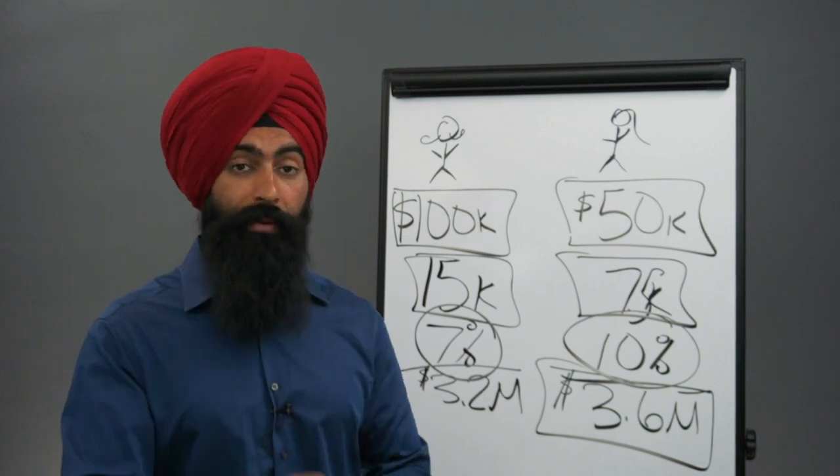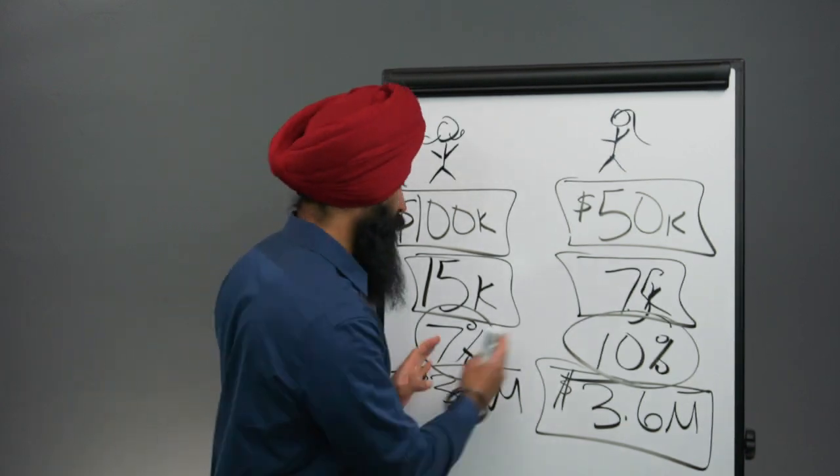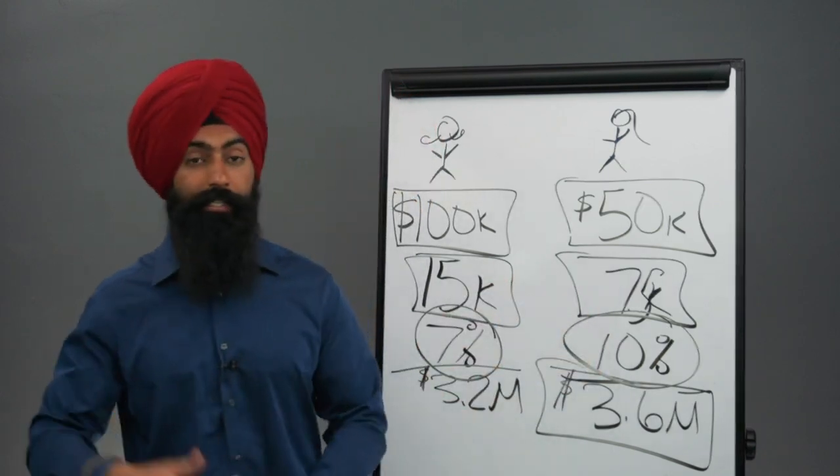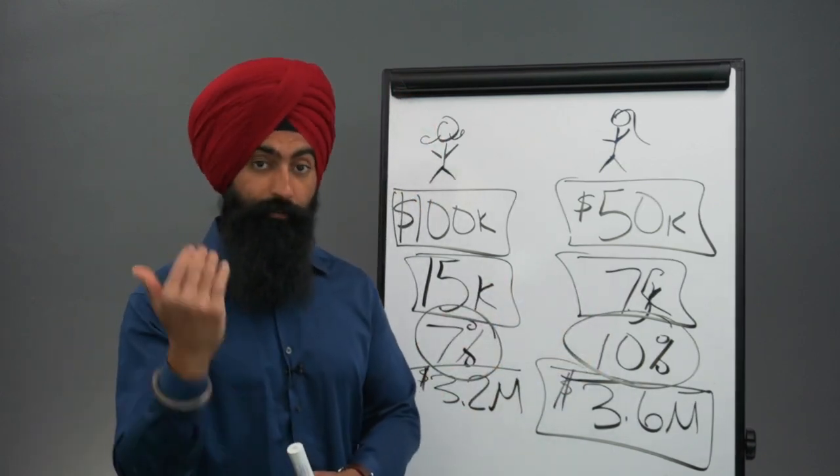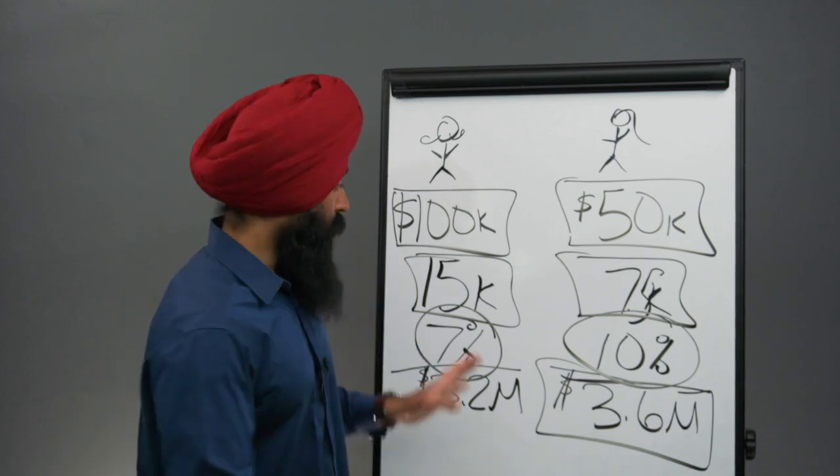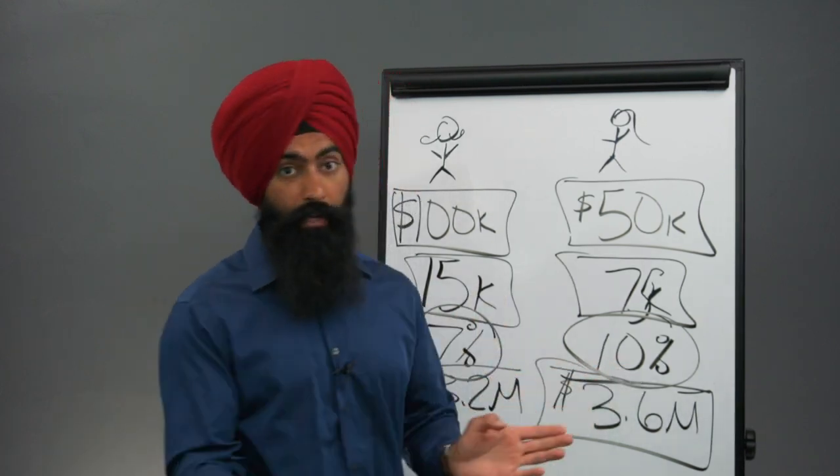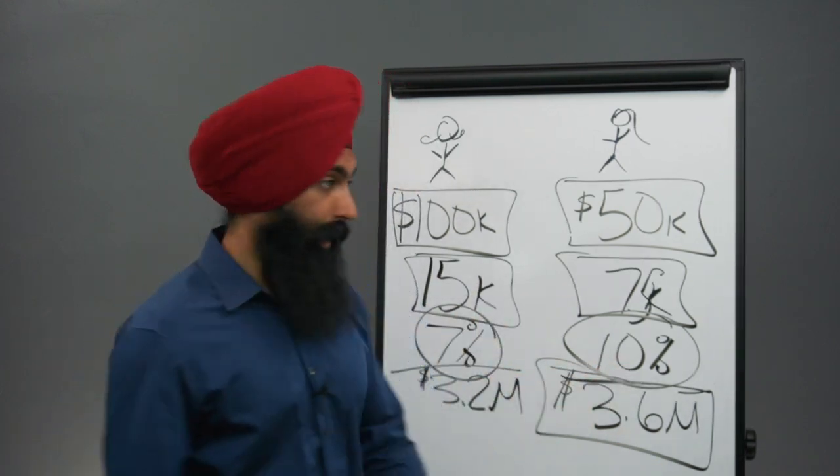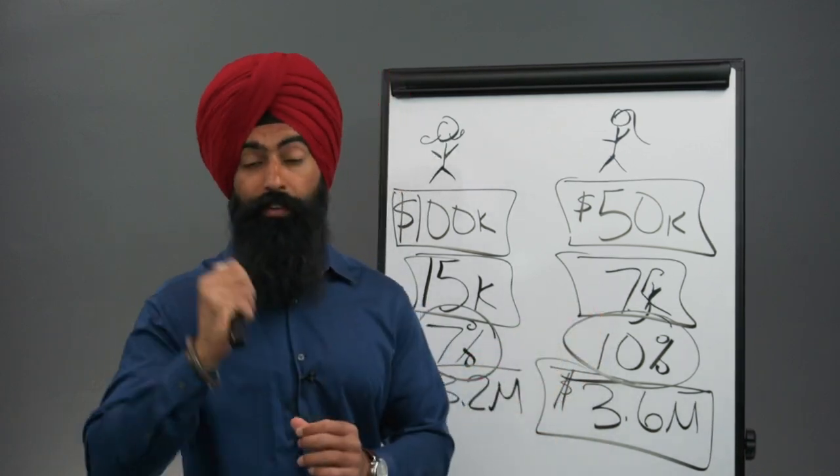And then third, if you really want to become wealthy, you have to understand how can you increase the returns on your money, because the faster you can double your money, the faster you'll be able to build wealth. See, all this rate of return is telling you is how long it's going to take for your money to grow and how fast your money is going to grow. This is the velocity of money.